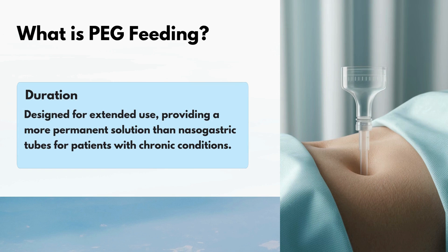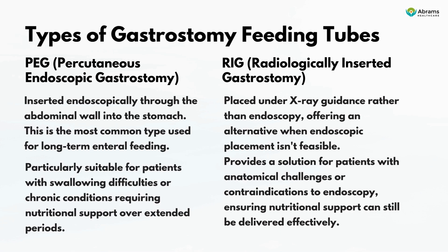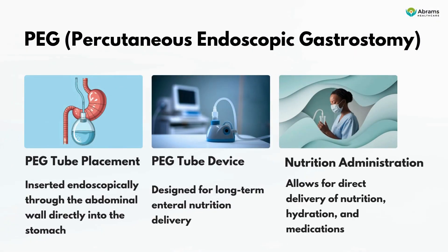There are two main types of gastrostomy feeding tubes. PEG — percutaneous endoscopic gastrostomy — is inserted endoscopically through the abdominal wall into the stomach. It is the most common type, particularly suitable for patients with swallowing difficulties or chronic conditions requiring long-term nutritional support. RIG — radiologically inserted gastrostomy — is placed under x-ray guidance rather than endoscopy, offering an alternative when endoscopic placement isn't feasible.